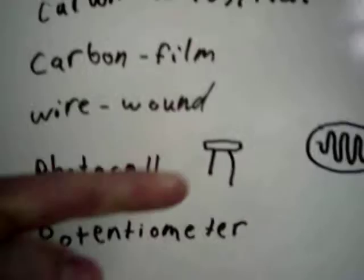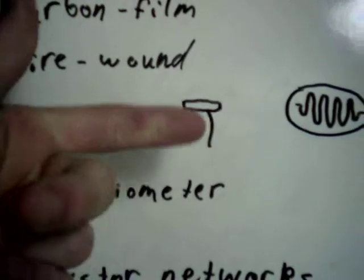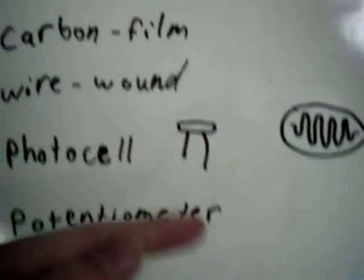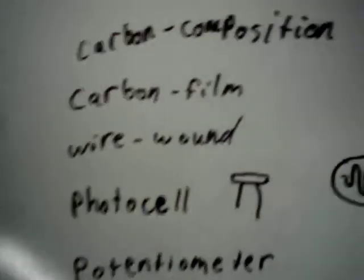So yeah, it'll just have a core, and then wire will be wound around that, a resistive wire. The core is an insulating material.